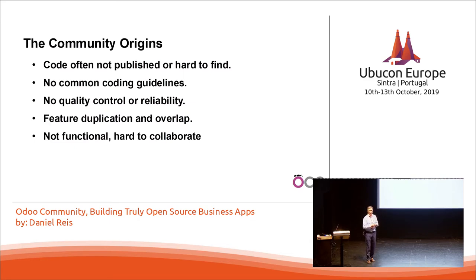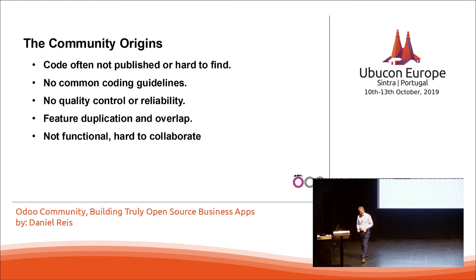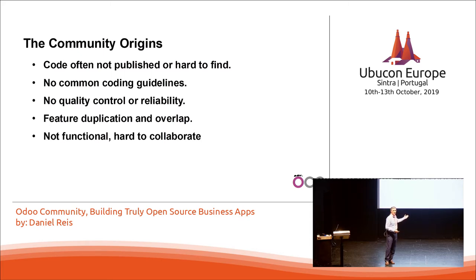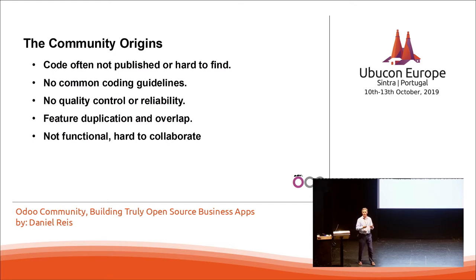Also, there was no way to control quality — you could find modules on the web, download them, try them, and they wouldn't even install; they would have syntax errors. Another problem was feature duplication — two or three companies were developing the same features, which doesn't make sense for small 10-20 person companies investing resources on creating features that are not value-added for their customers. This is an unnecessary cost that repeats — there could be collaboration that would cut down the cost for all these companies. While Odoo has the capability to have a community, in fact it was not working and the collaboration was not being effective.